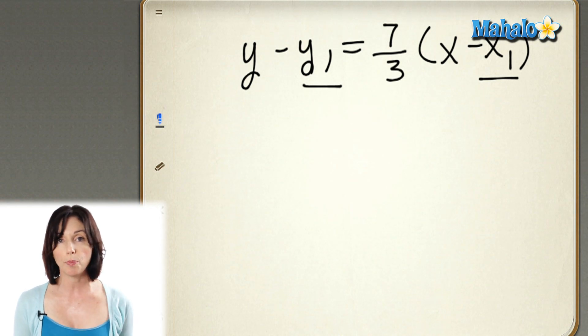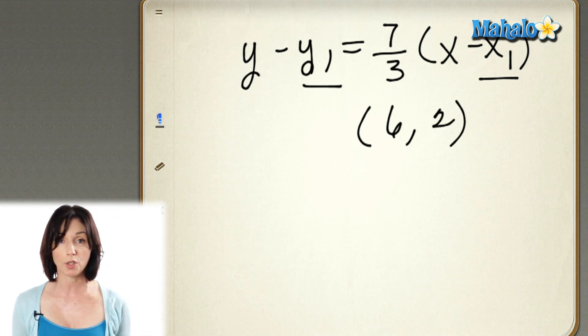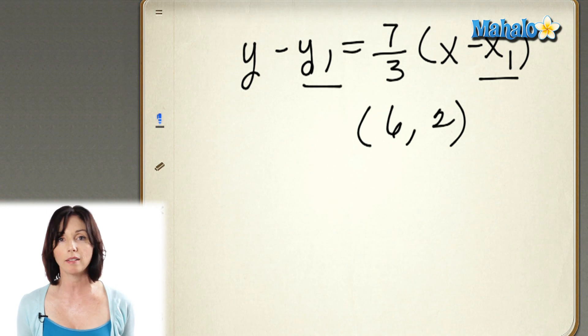And you can use either of the points that we started with to find the slope. I'm just going to use the point 6, 2. But you could easily, just as well, use the point 3, negative 5. It doesn't matter. They're both correct.